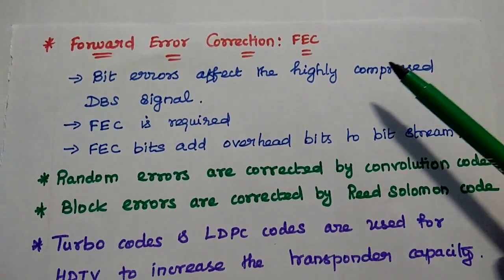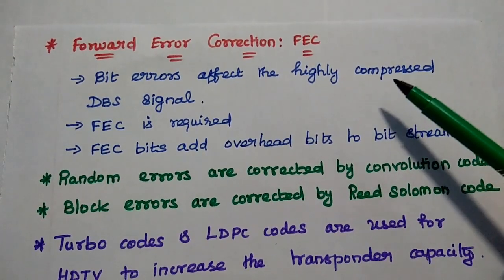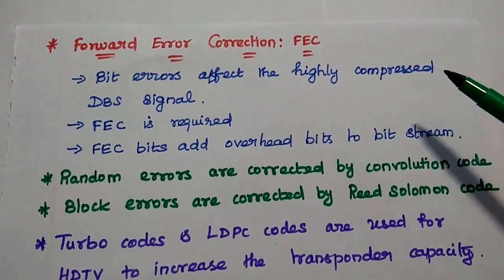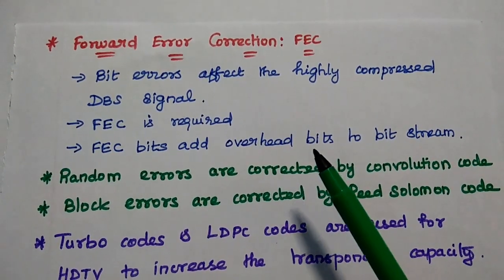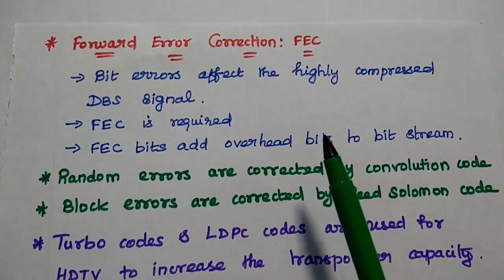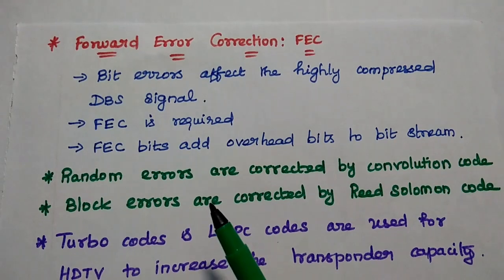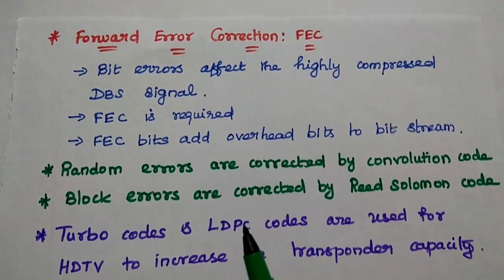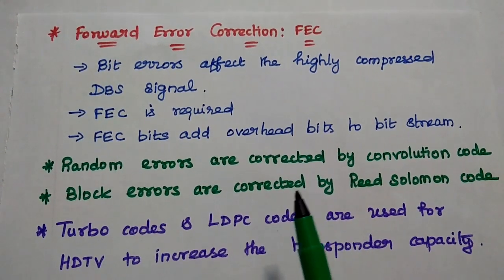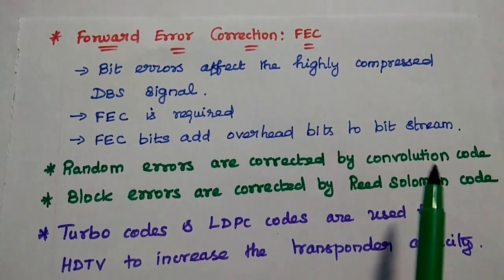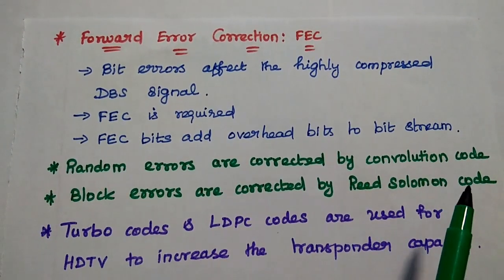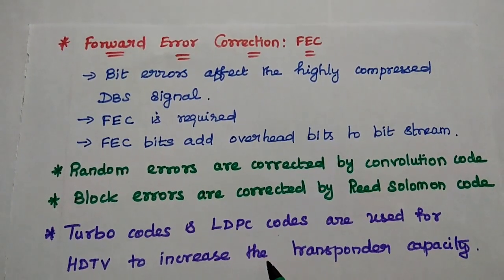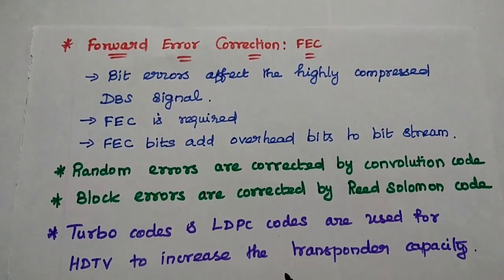The next parameter is forward error correction, or FEC. When compressing audio, data, and video signals together into a highly compressed DBS signal, bit errors may occur. These are controlled using a forward error correction mechanism by adding overhead bits to the bitstream. Random errors are corrected by convolutional codes, and block errors are corrected by Reed-Solomon codes. Turbo codes and LDPC codes are also used to control errors in signal compression, mainly for HDTV to increase transponder capacity.